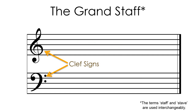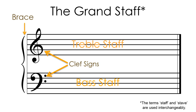Clef signs are placed at the beginning of each line of music and specify which stave is associated with the high and the low ranges of the piano. A brace joins the two staves together. This is called a grandstaff.